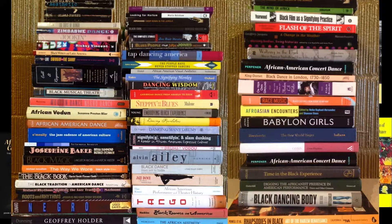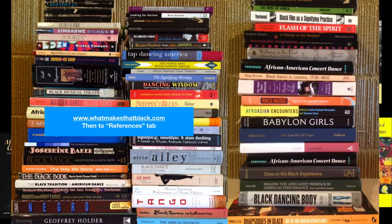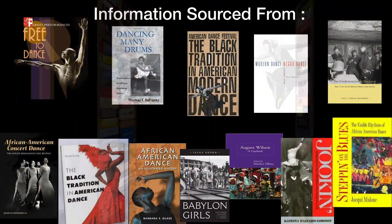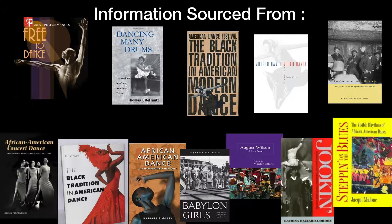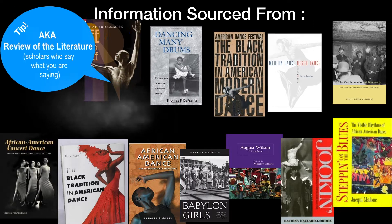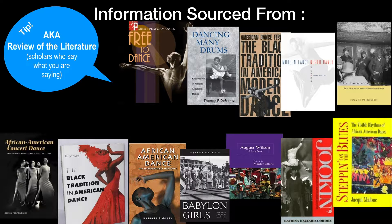I have used several books in my research. If you go to my website, www.whatmakesthatblack.com, and go to the reference tab, there is an entire list of references, books, journals, articles, and videos—about 15 pages worth. For this lecture, I primarily use those sources and also the African American Genius in American Modern Dance produced by the ADF, which is a companion to this book. This is known as review of the literature: scholars who say what you are saying.